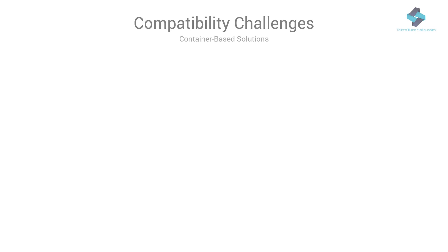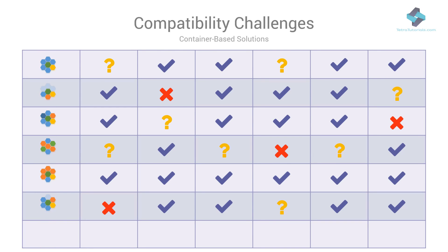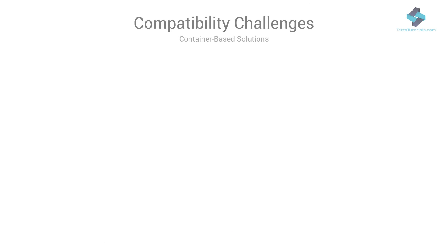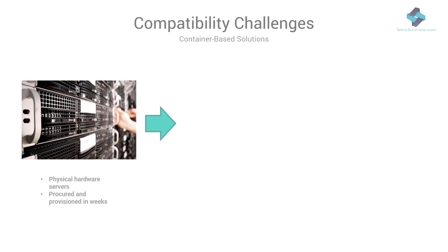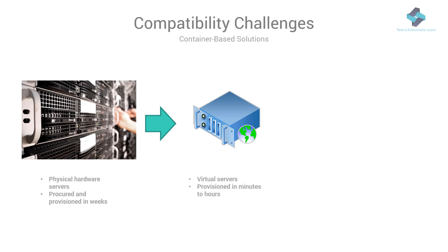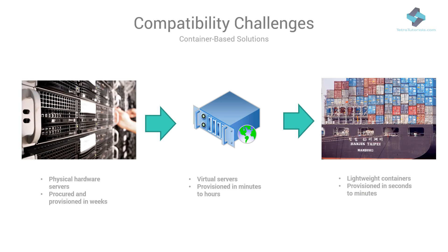Coming back to our original problem, the goal is to solve our compatibility matrix by moving away from the physical or virtual hardware dependency. We can learn from the shipping analogy and do the same thing for software. Just as we moved from physical servers to virtual servers, we can move toward tiny software containers which contain all our code and can be deployed directly to target environments in the exact same configuration as they ran on our development workstations. Let's take help of another analogy to further understand the use of containers in software development and deployment.